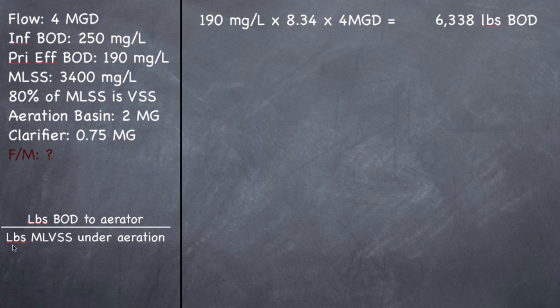Now the second part of the formula is pounds of MLVSS, mixed liquor volatile suspended solids under aeration. Now that's important right there. Under aeration. Where are you aerating? Well you're aerating in your aeration basin. Are you aerating anything in your clarifier? No, not at all. So we're not going to use this number at all. It's thrown in there to confuse you. That's what they're trying to do on this exam. They're trying to confuse you. See if you really know what you're talking about.